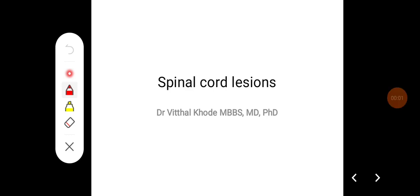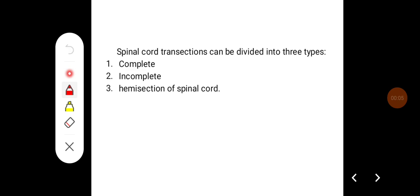Hello everyone. In this class we will try to learn about spinal cord lesions. Spinal cord transection can be divided into three types: complete, incomplete, and hemisection of the spinal cord.